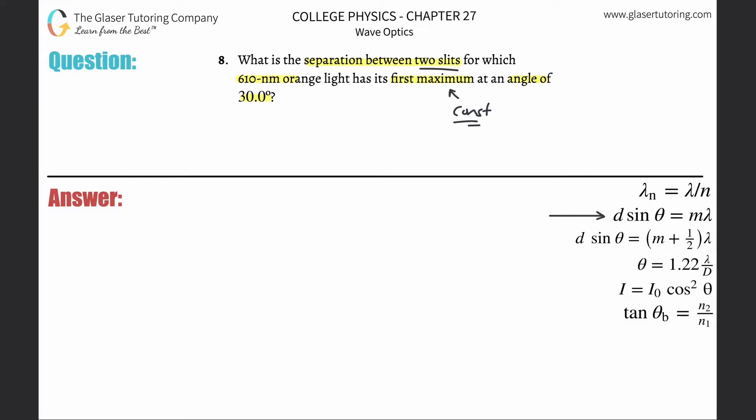It says that d, the separation or the distance between the two slits - oh wait, that's what they're asking us to solve for - is going to be multiplied by the sine of the angle between the slit and that first order maximum in this problem.